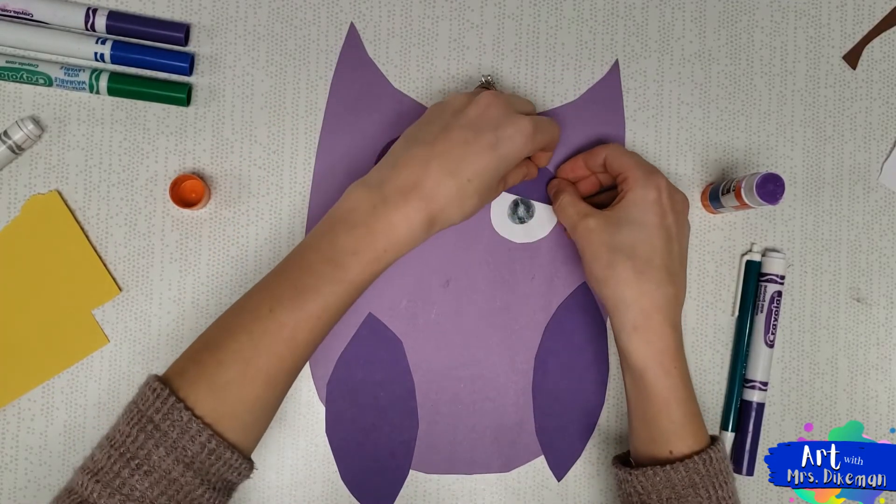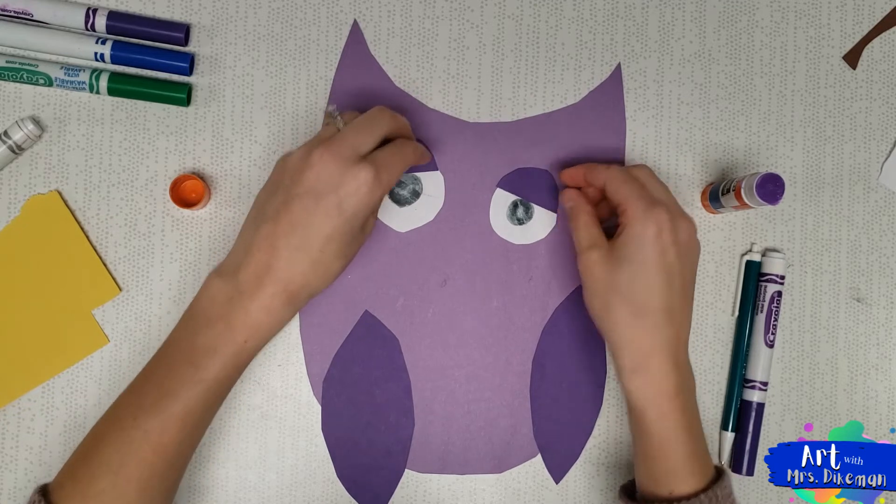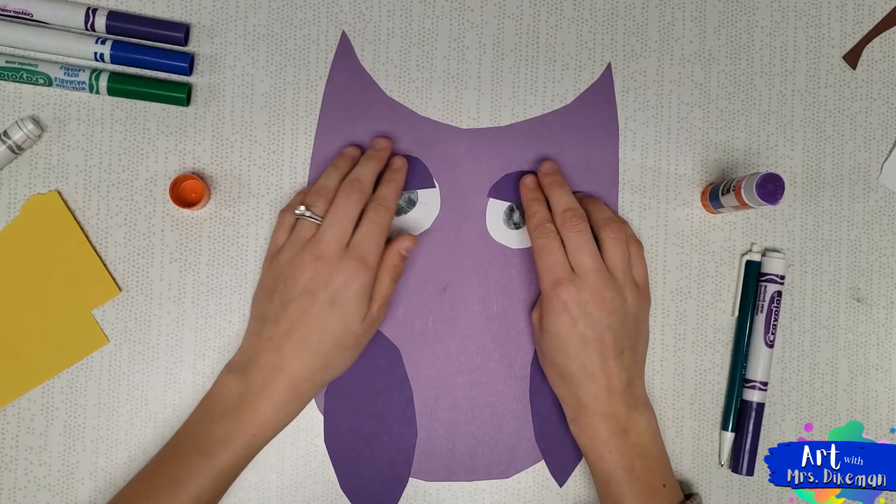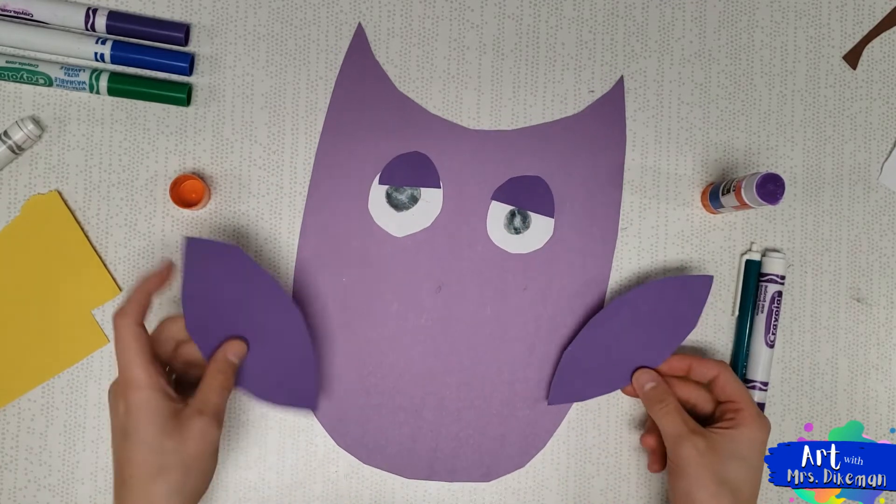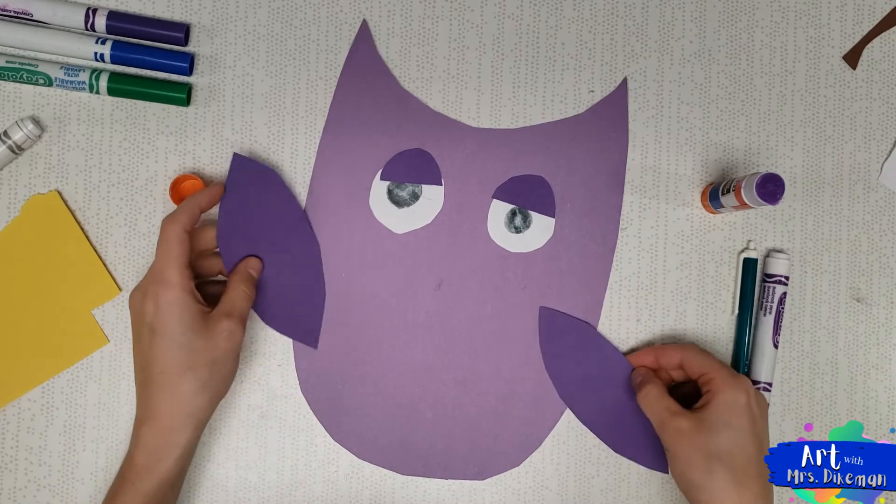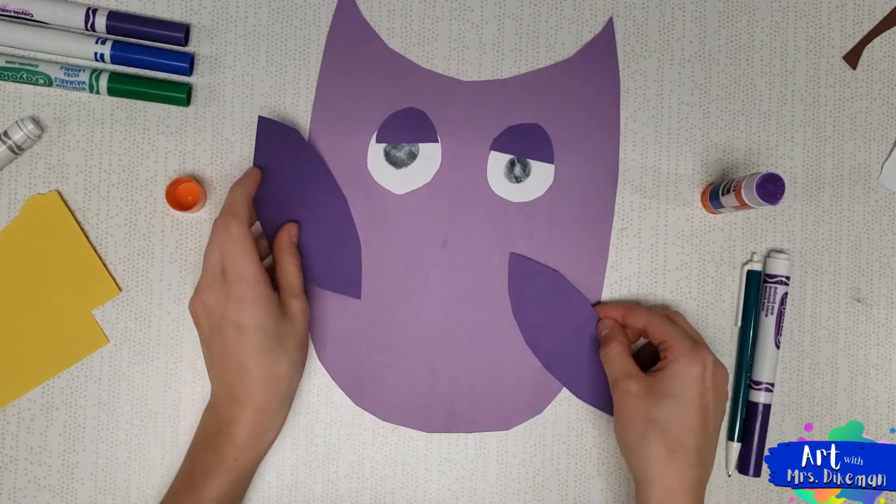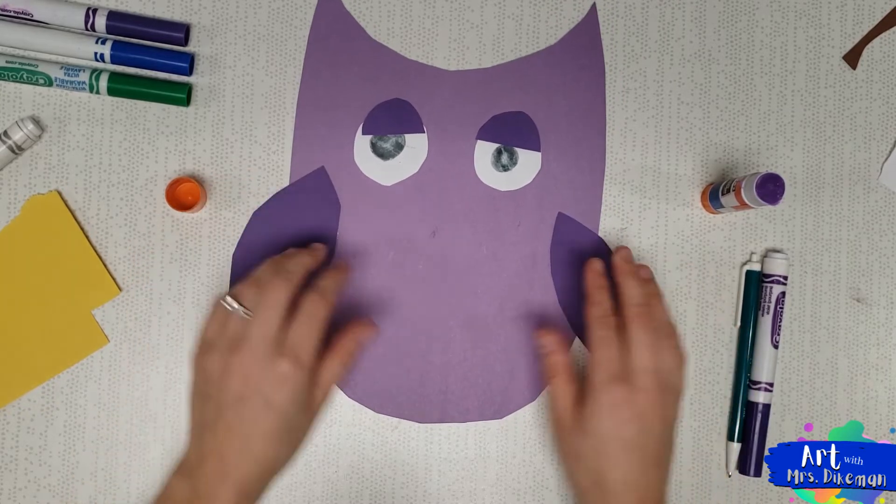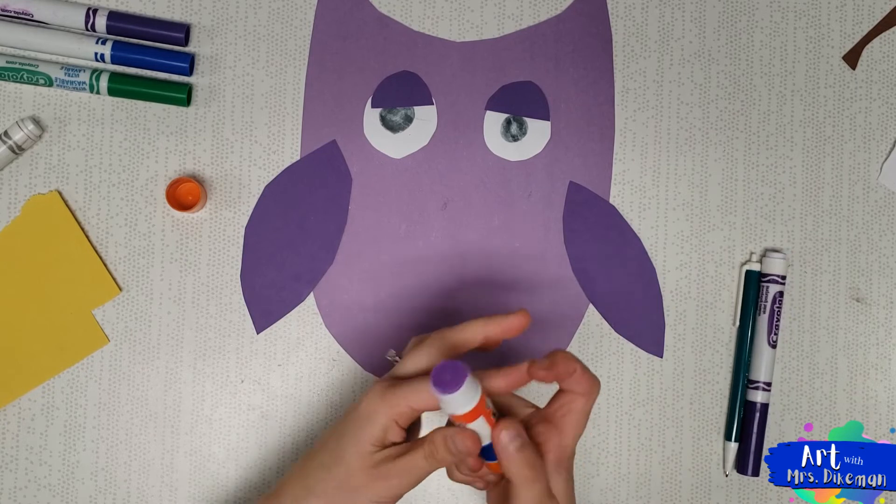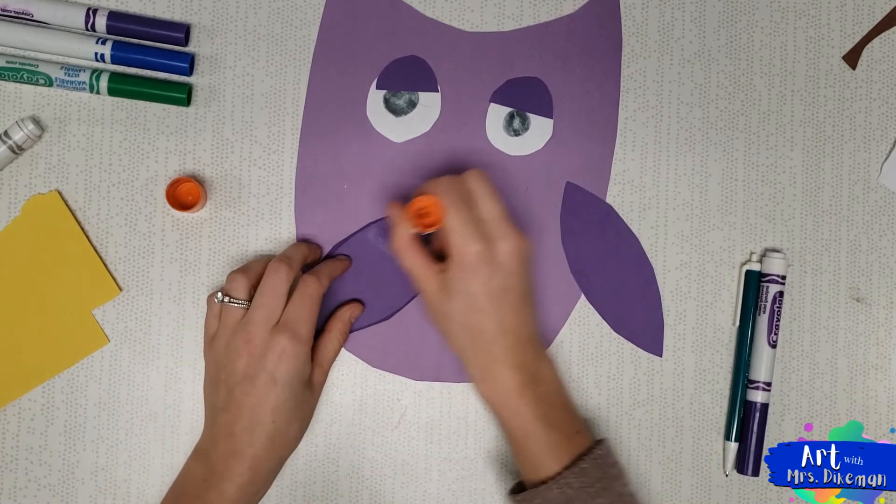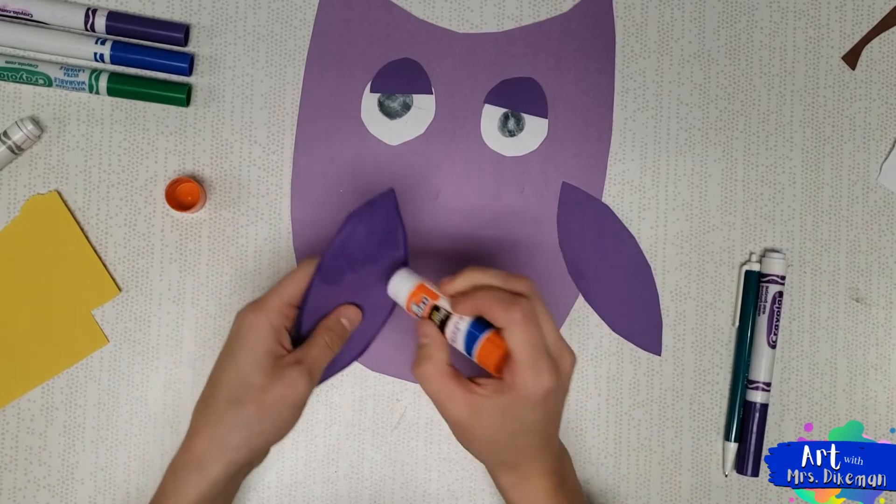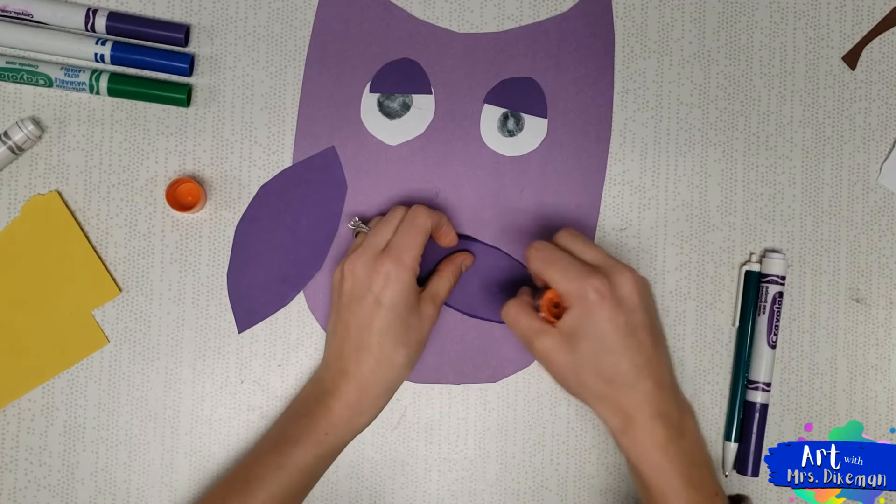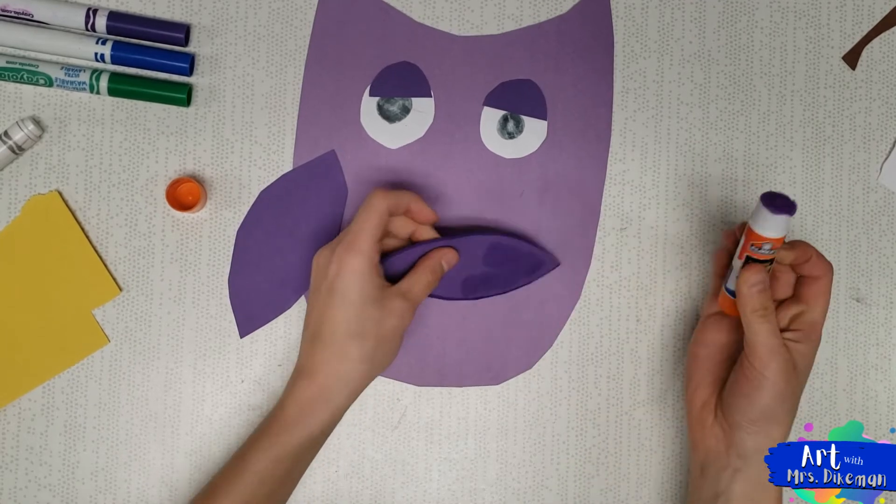The eyelids can go on top like this. You can make them look kind of sleepy, mad, maybe mad, I don't know, maybe he's just tired. His feathers you can have going up, you could have him going like he's disco dancing, or just playing down or tucked in like he's hugging himself. I'm going to have mine just come down like this. Add a little bit more glue and you can glue on those feathers and eyelids depending on what kind of expression you'd like to give him or her.